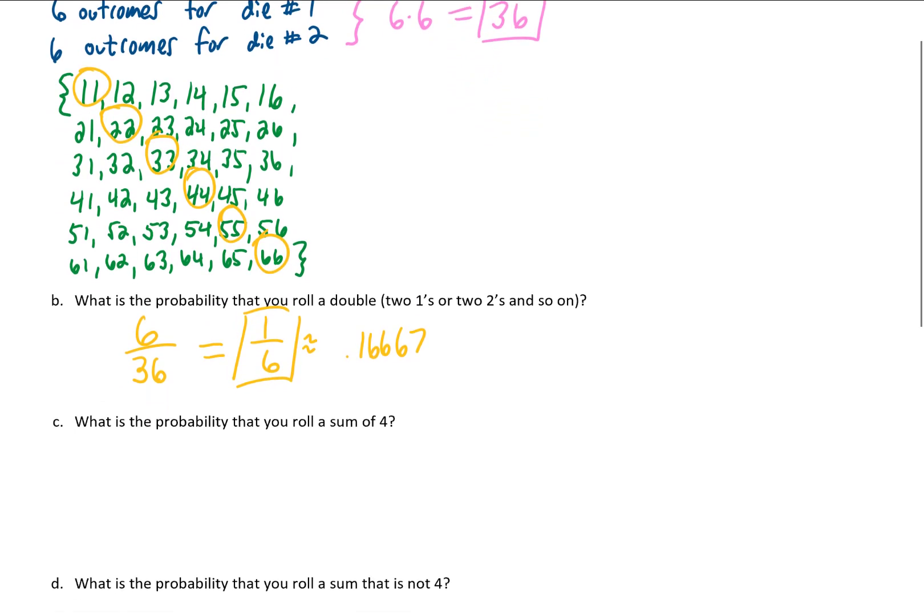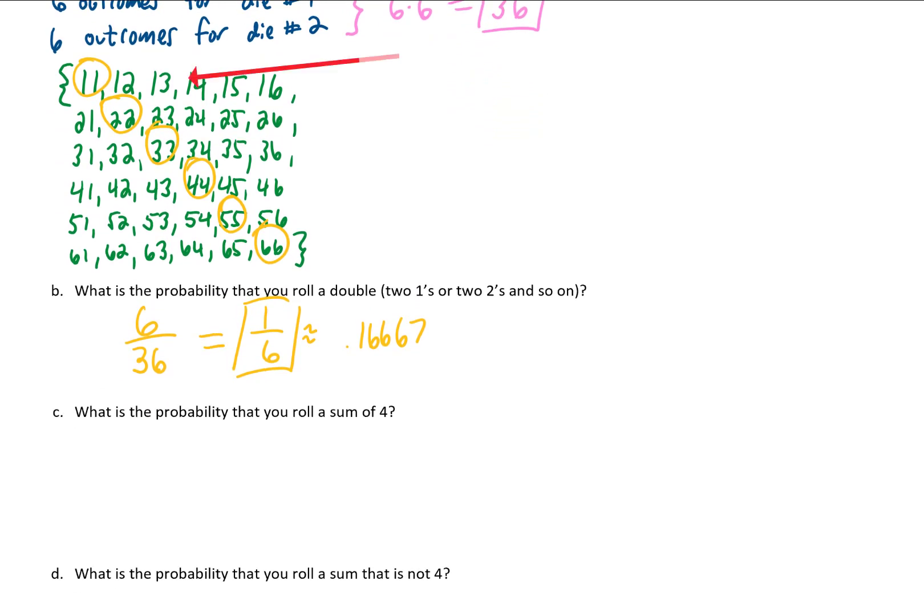Okay, so I'm going to circle all of the dice rolls that sum to four. It's cool they line up in a diagonal like that. It looks like there are just three ways to roll a sum of four out of 36 total rolls. That does reduce to 1 twelfth, and I'll just leave it as 1 twelfth.